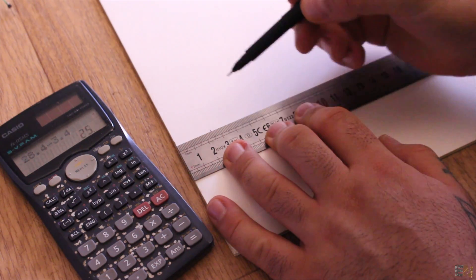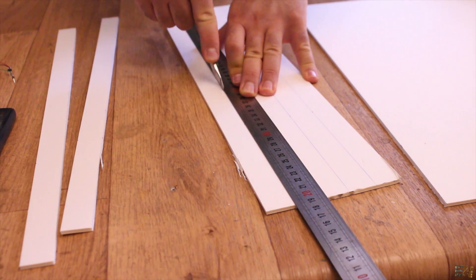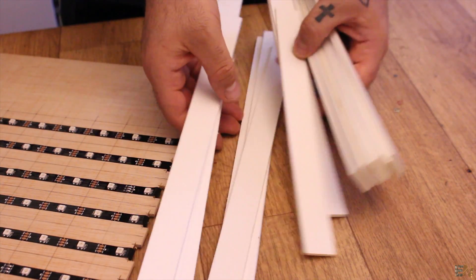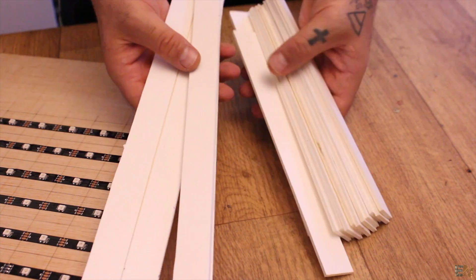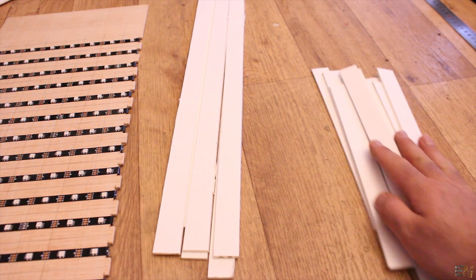I marked the lines for all the strips and I cut 16 small ones and 7 long strips. Cutting this foam is very easy, just use a cutter once again.